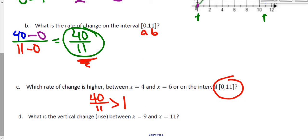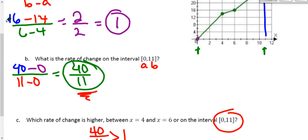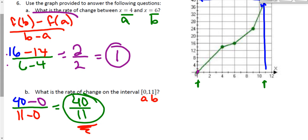The last question is phrased in a way that might seem a little confusing, but it's actually a very straightforward question. It says, what is the vertical change? What is the rise between x equals 9 and x equals 11? So to find our rate of change, we do rise over run. This is literally just asking for the rise. So what is the change in y values? That's it. That's all I have to do.